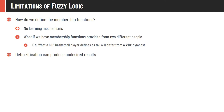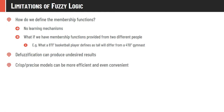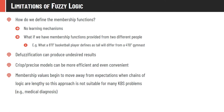Defuzzification can produce undesirable results. Crisp sets always work with crisp values, but in fuzzy systems the crisp input is converted to fuzzy value (fuzzification), processed, output is generated as fuzzy, and then converted back to crisp (defuzzification). Different defuzzification methods may produce different results. Crisp or precise models can be more efficient and convenient. Membership values can also drift when there are many rules in the system.